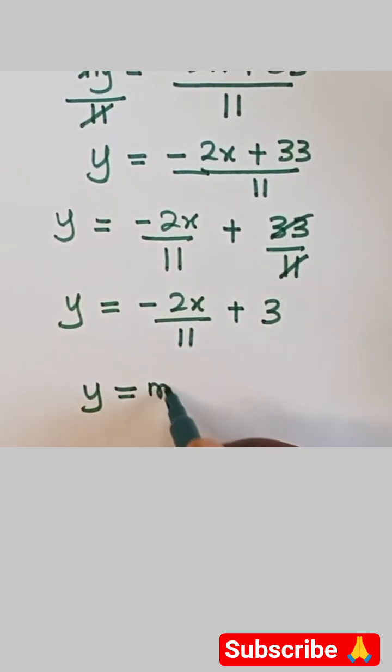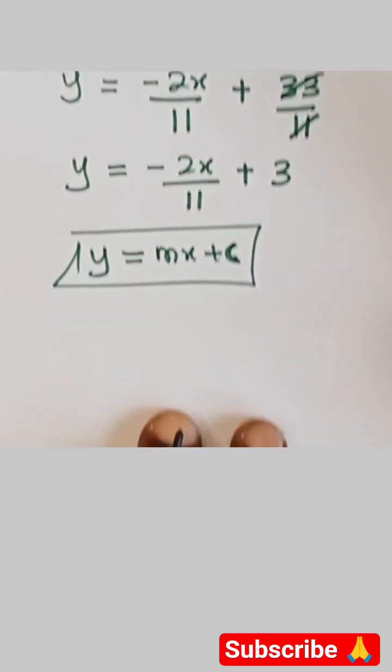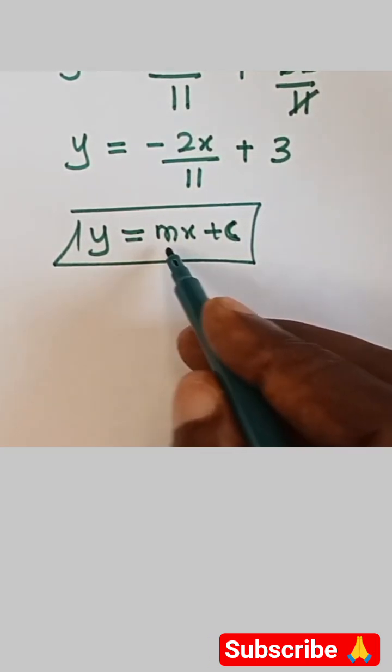So then let's write the general equation again: y equals mx plus c. This is the general equation. And from this general equation, what is our m? The m is the slope, while the c is the intercept.